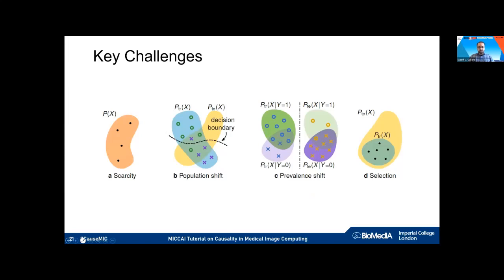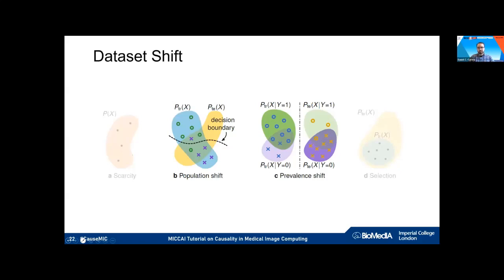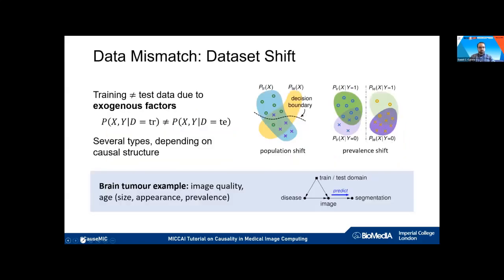Thanks Ben. Now we'll look at a specific kind of data mismatch: dataset shift. There are two main processes that can produce differences between the distributions of your training data and your target environment data. The first is dataset shift, defined as the scenario where differences are caused by exogenous factors — for example, different cohorts, different hospitals, or different scanners. Even with the same modality like T1-weighted MRI, you can get very strong differences between data acquired from different centers.